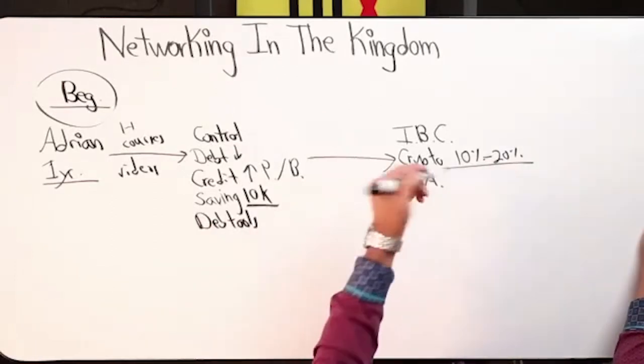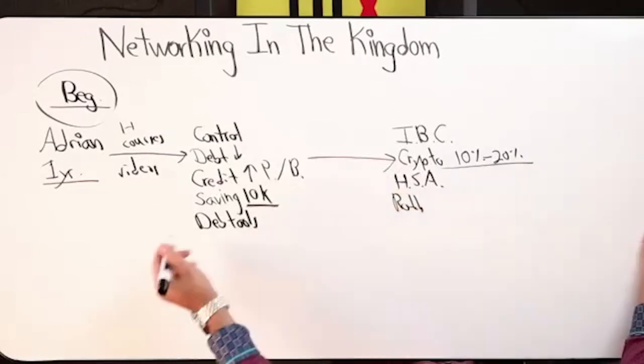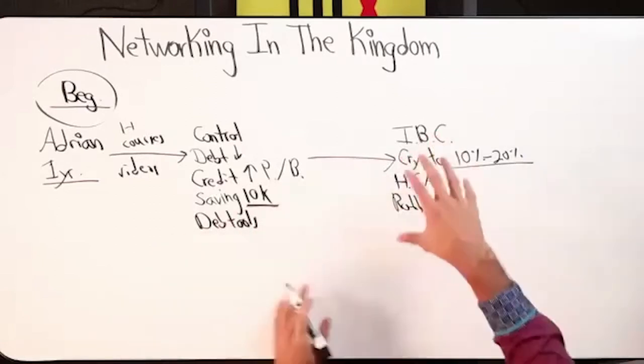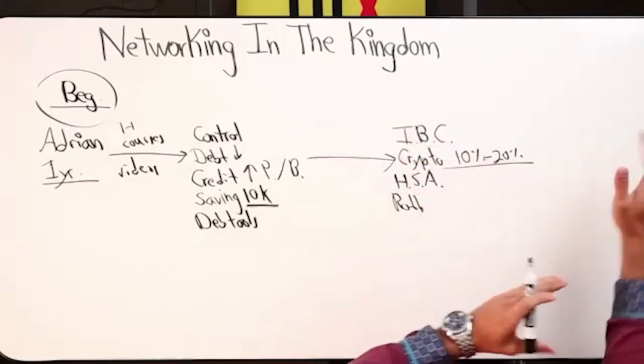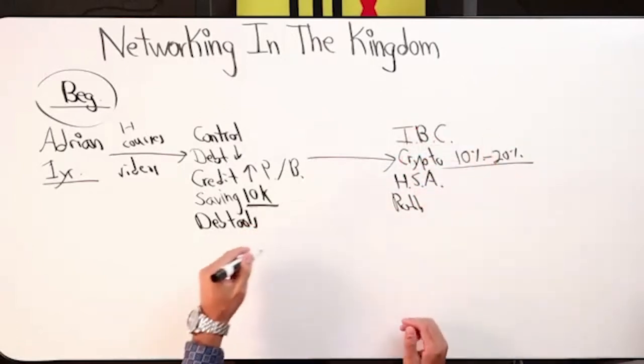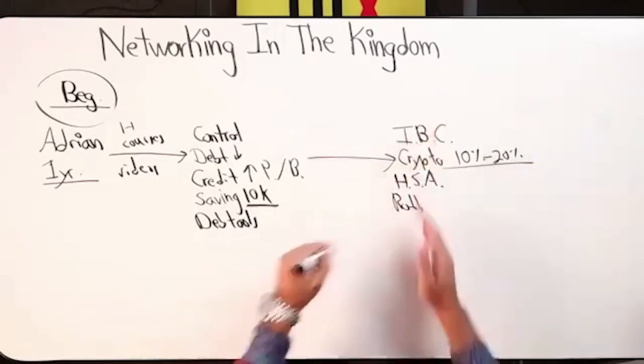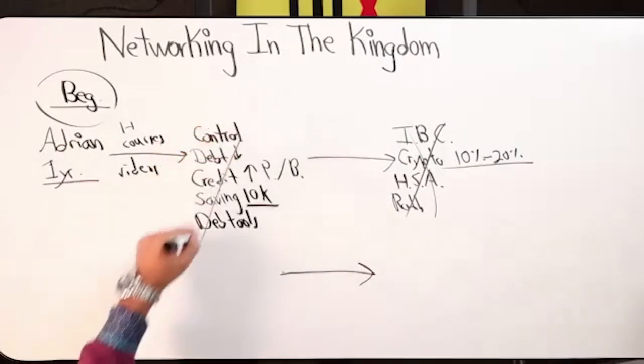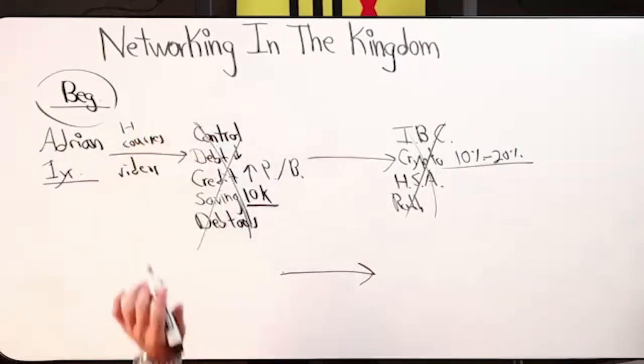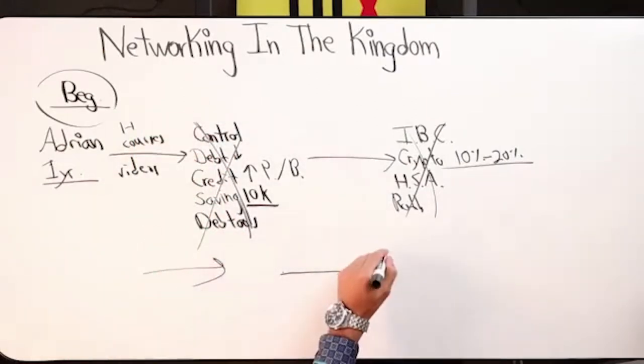Then he opens up an HSA, maybe he's got a Roth already, starts opening up different types of investment accounts for the long term. But then there's a component of clients that completely ignore all this, and maybe even majority of this, and they're right here in the 10x camp.